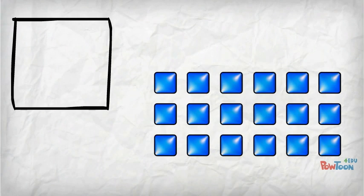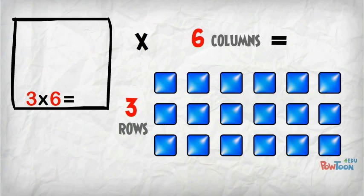Here's another array. 3 rows times 6 columns is 18.